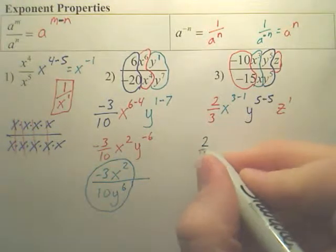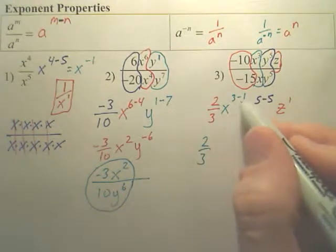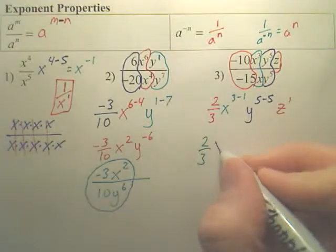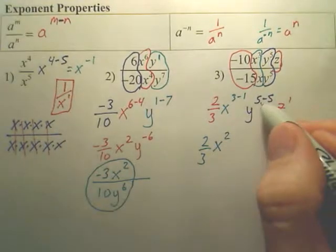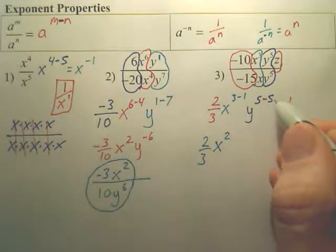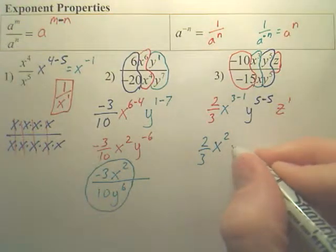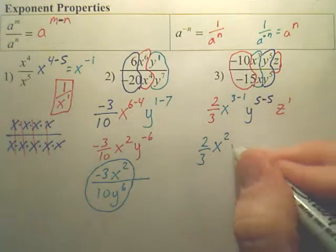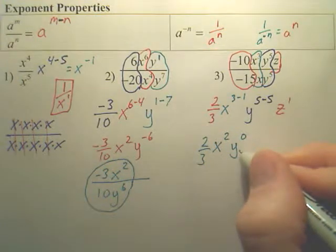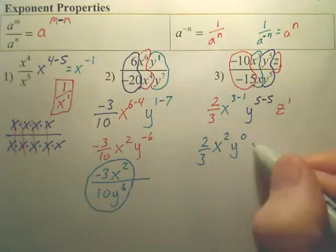So what I got here is 2 thirds, 3 minus 1 is 2, 5 minus 5 is 0. What do you do with 0? Isn't that 1? Didn't it disappear? And z.